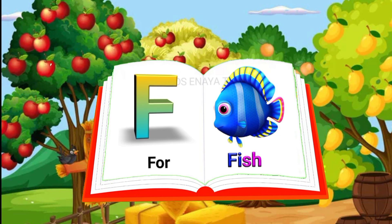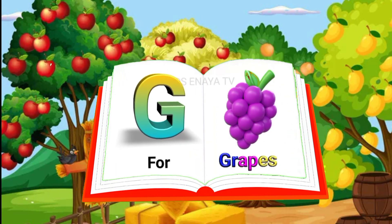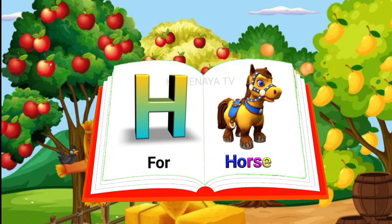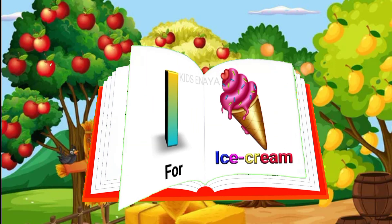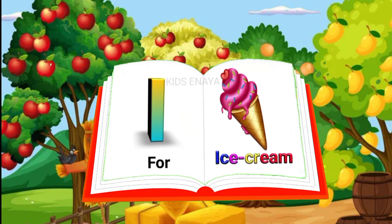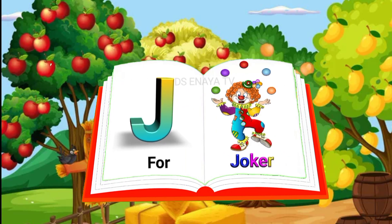F. F for fish. G. G for grapes. H. H for horse. I. I for ice cream. J. J for joker.